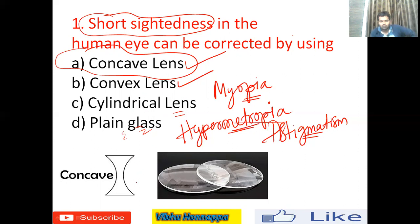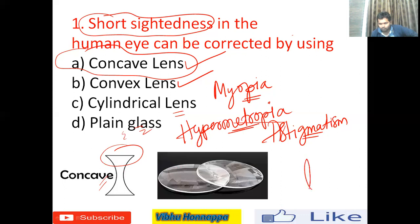Lenses are an optical medium where light passes through and either diverges or converges. A concave lens has thicker edges and a thinner middle part. A convex lens has thinner edges but a middle part that bulges out. These are the two common lenses we use. The right answer for this question is concave lens.